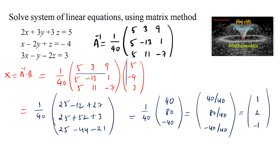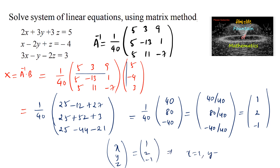Since the variable matrix is [x; y; z] = [1; 2; -1], therefore x = 1, y = 2, and z = -1. This is the solution for the given system.